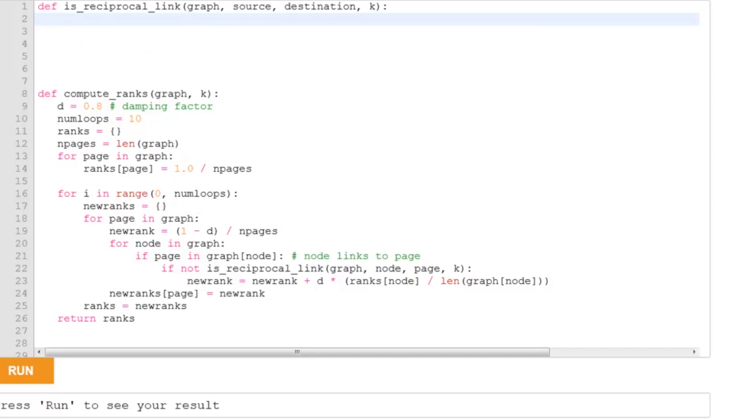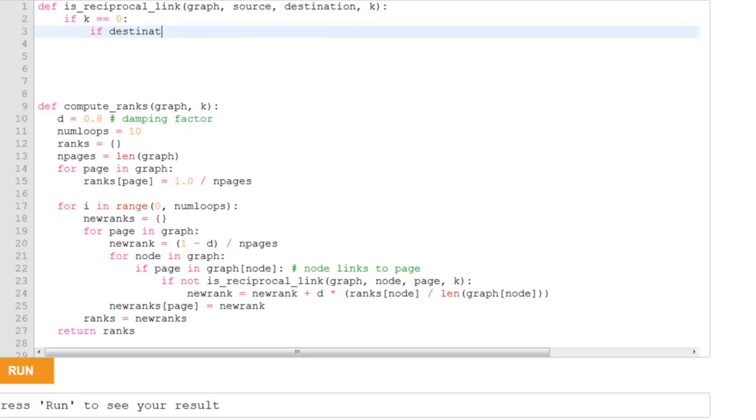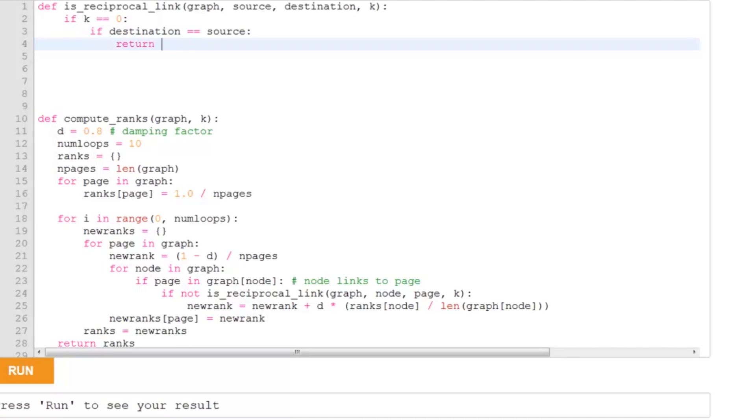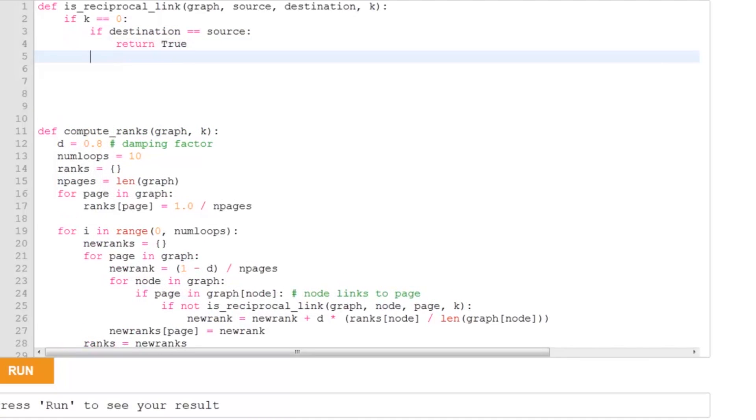To code isReciprocalLink, I'm going to use recursion. So if K is zero, that was the first case we looked at in the example, then we have a reciprocal link whenever the destination and the source are the same. So in that case, I'll return true and otherwise we return false.